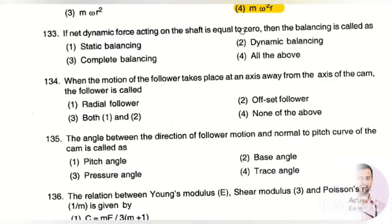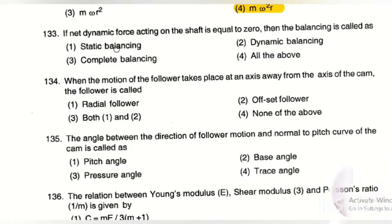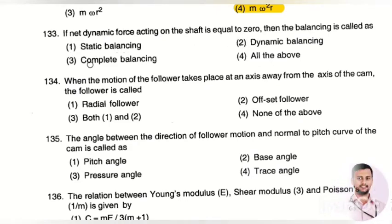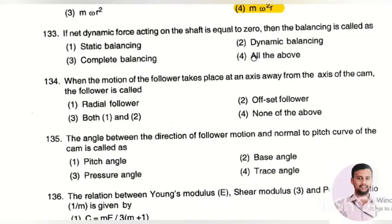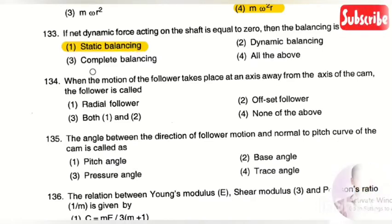The next question: if the net dynamic force acting on a shaft is equal to zero, then the balancing is called — option 1: static balancing, option 2: dynamic balancing, option 3: complete balancing, option 4: all of the above. The right answer is static balancing.